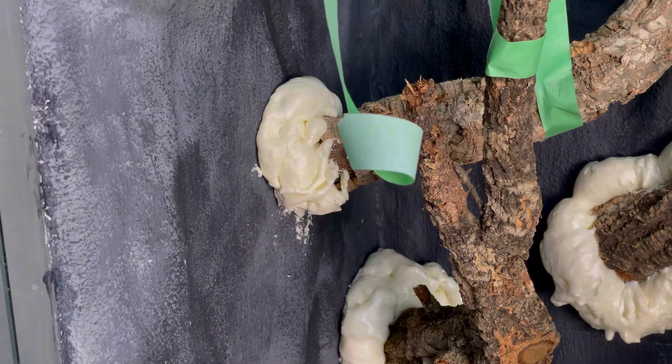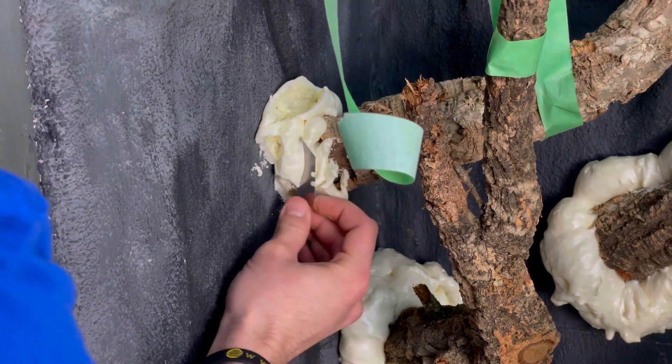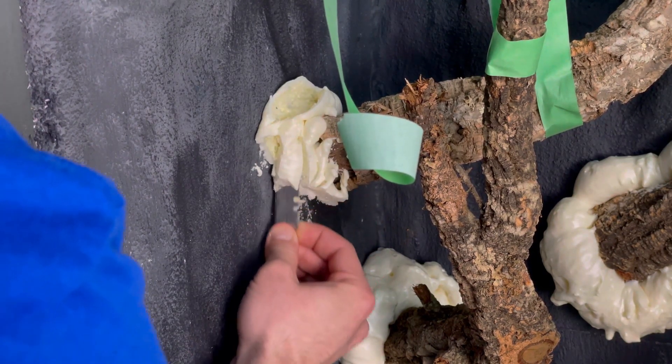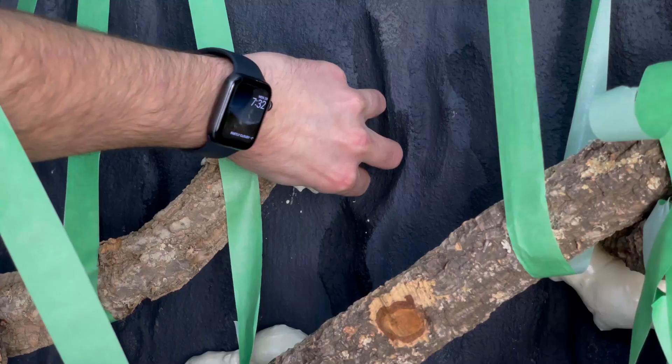Once the foam had dried, we went back in with the dremel and shaved off all the smooth surfaces which made it look more natural and will allow the drylock to stick to it better.